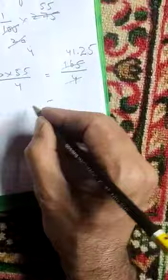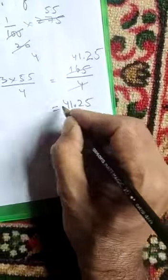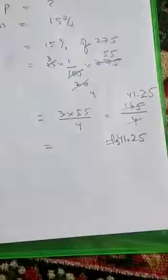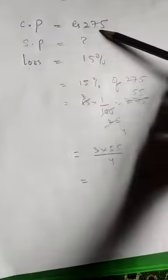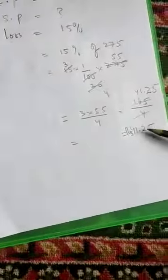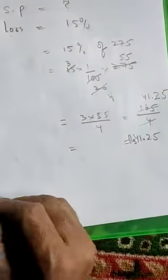The calculation gives us 41 rupees 25 paise. Arena bought the book for 275 rupees and the loss is 41.25 rupees.